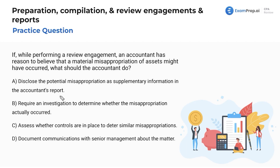If there's a problem, you go to the client and say, hey, there's a problem — let's fix it so we can give you a clean opinion. You don't disclose it right away. Keep in mind it's not even confirmed yet; it's only reason to believe. Option B: require an investigation to determine whether it actually occurred — I'll leave that on the table for now. Option C: assess whether controls are in place to deter similar misappropriations — that wouldn't address our immediate concern about this one particular instance, so I'm going to cross off letter C.